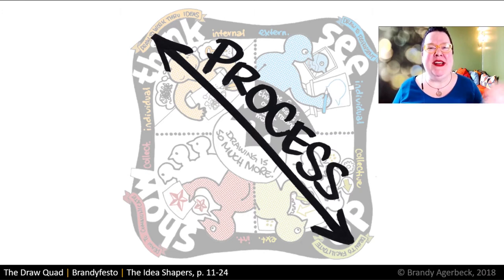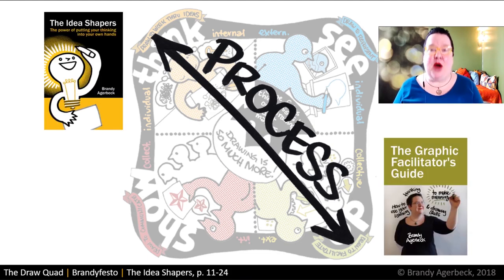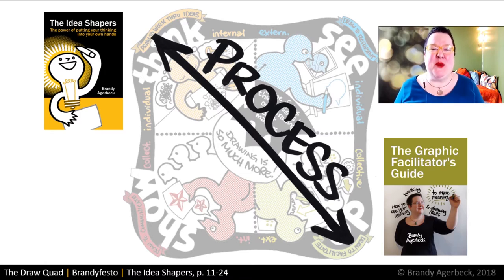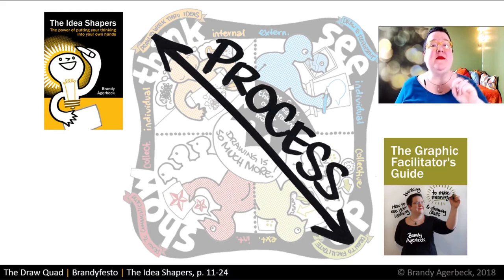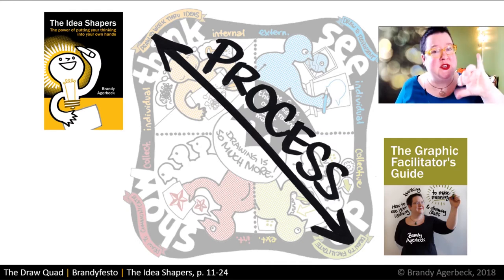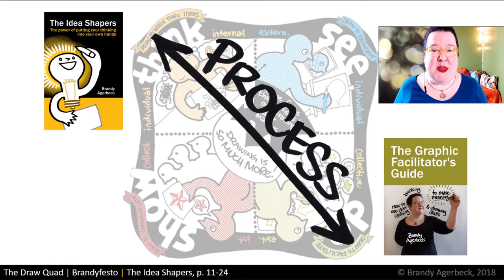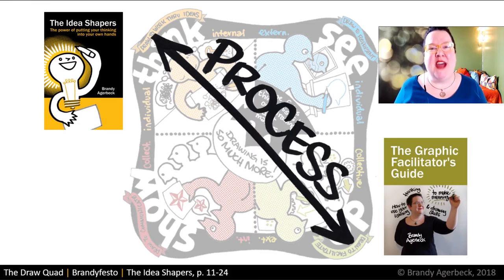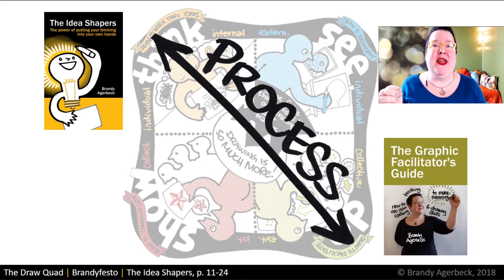The next slide shows exactly how I connect the process-focused drawing to my two books. The green book — The Graphic Facilitator's Guide — is entirely focused on drawing to do, that green corner of the quadrant. The latest book, The Idea Shapers, is all about individual meaning-making, visual thinking for yourself. People often ask when the red or blue book is coming — they aren't. Plenty of other people are building great resources around those product-focused drawings. What I'm here to do is help build resources to help you use drawing as your best thinking tool.